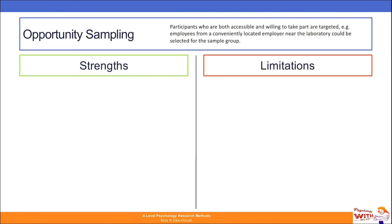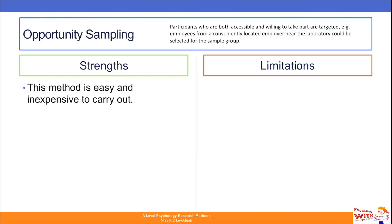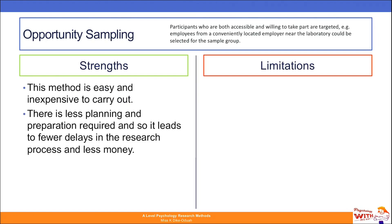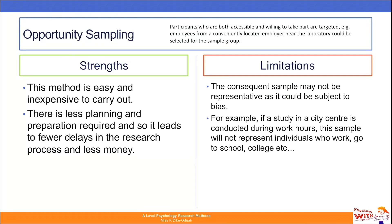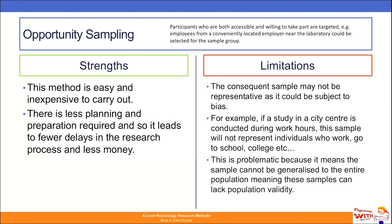Now onto the strengths and limitations for each sampling technique, starting with opportunity sampling. A strength is that it is very easy and inexpensive to carry out — if participants are readily available there is less planning and less cost involved. A limitation is that your sample may not be representative. For example, conducting a study in a city centre during working hours means your sample won't reflect those at work or school, so you can't generalize findings to the broader population, and these samples may lack population validity.